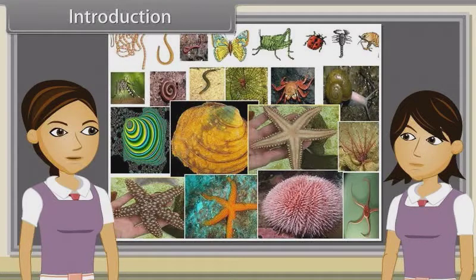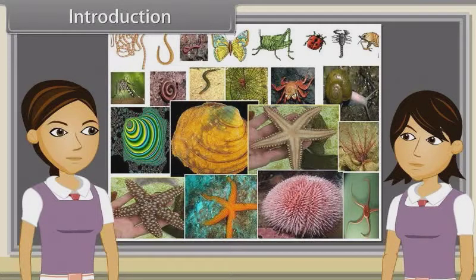Now we are going to discuss characteristics of Hemichordates, Chordates, Vertebrates, Cyclostomata, Chondrichthyes, Osteichthyes, Amphibians, Reptilia, Aves and Mammalia.